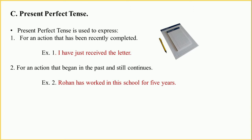Present perfect tense is used to express an action that has been recently completed. The action of receiving a letter has recently completed. Generally, words like 'yet,' 'already,' 'just,' 'presently,' etc. are used in this tense. It is also used to express an action that began in the past and still continues. For example: 'Rohan has worked in this school for 5 years' — Rohan has completed 5 years of work in the school and he is still working.